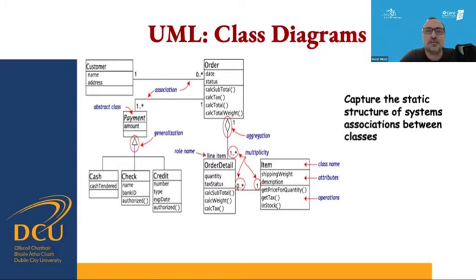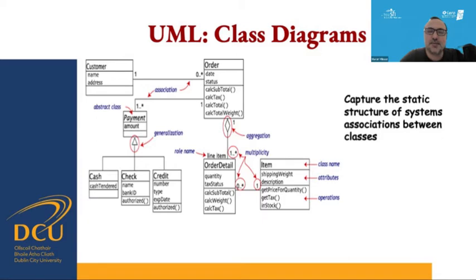An order can be aggregated through other directions such as order details. An order should have at least one detail, such as the quantity of the order, the tax status, and there are behaviors for calculating the subtotal, calculating the weight, and calculating the tax. Order details can also have an association relationship with an item. An order detail should have an item, but an item may or may not have an order detail. As you can see, the class has the class name, attributes, and operations.